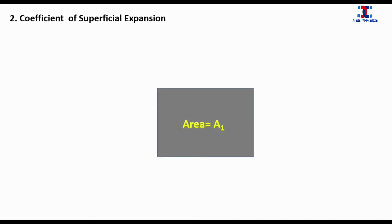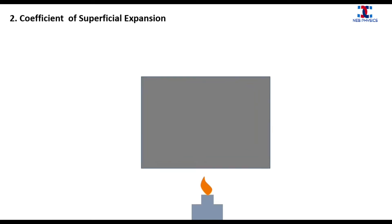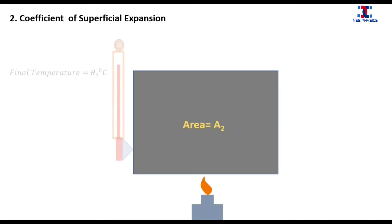Suppose we have a thin metal sheet of initial area A₁ and initial temperature θ₁ degrees Celsius. When this metal sheet is heated for some time, it expands. After expansion, let the final area be A₂ and the final temperature be θ₂ degrees Celsius.